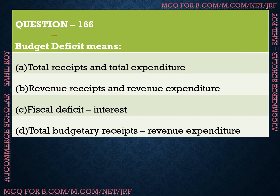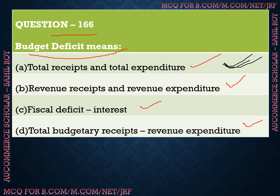Question number 166: Budget deficit means? We have four options: Option A is the difference between total receipts and total expenditure, Option B is revenue receipts and revenue expenditure. The correct answer is Option A — budget deficit means the difference between total receipts and total expenditure.